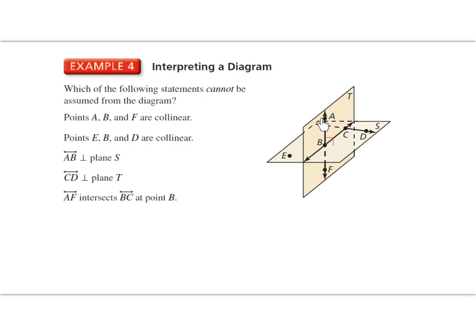We've got point A, point B. So far, they are together on the same line. And F. Okay? We can conclude that.